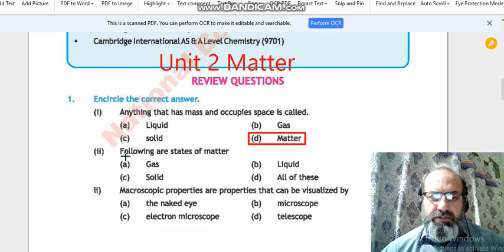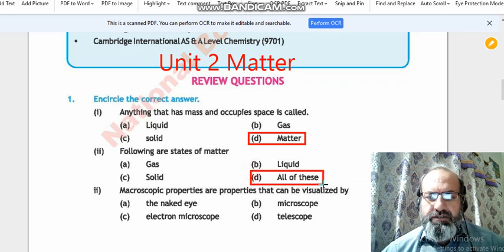Question number 2, following are the states of matter: gas, liquid, solid, and all of these. The correct answer is option D, that is all of these, because matter exists in all these three states.